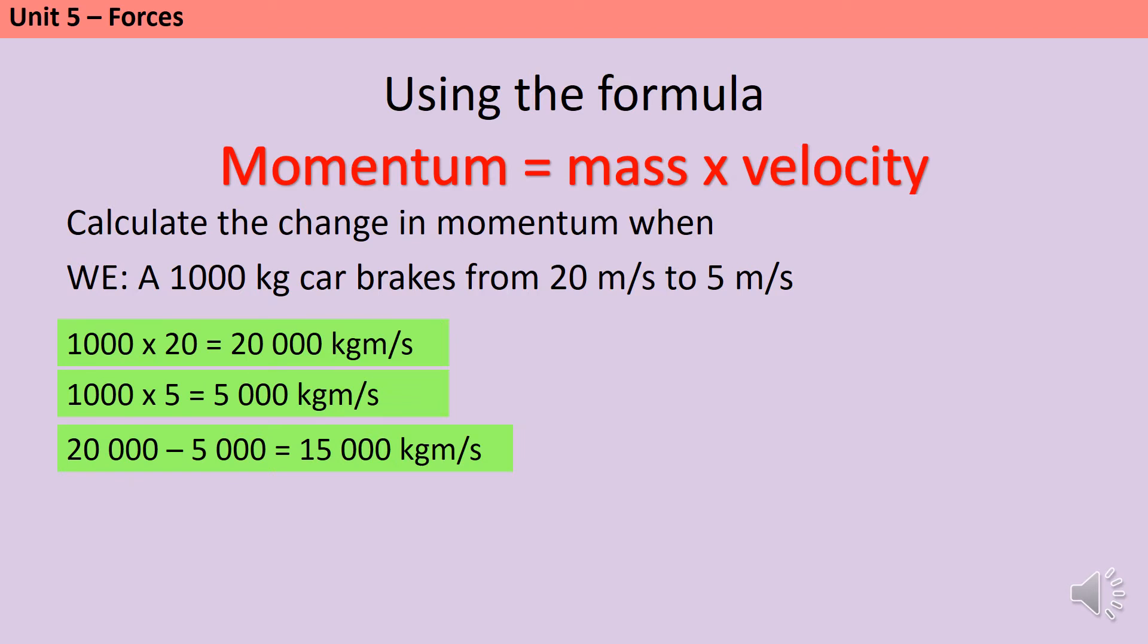The alternative, and to be honest, a slightly faster method that you can use, is to work out what the change in velocity has been, and then just multiply the mass by that change in velocity.